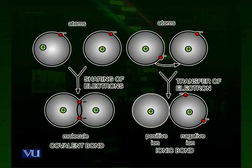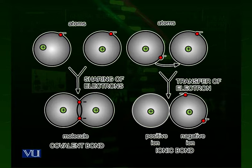Atoms do not live in isolation — they join together to make molecules. There are two types of bonding by which atoms join together. One is called ionic bonding, in which one atom gives away its electrons to another atom and they stay together. The other is covalent bonding, in which both atoms share some of their electrons and stay together.